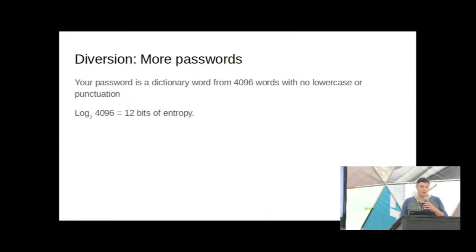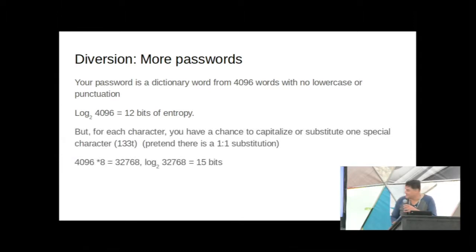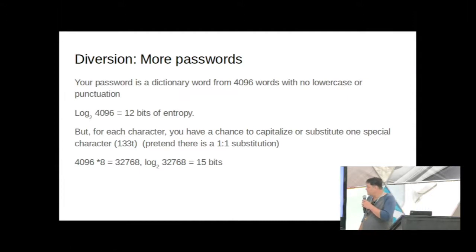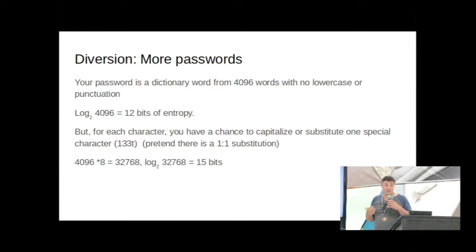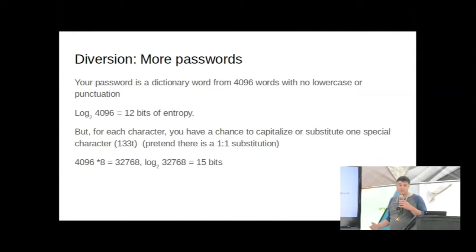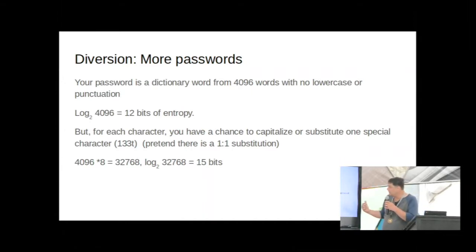If your password is a dictionary word from a 4,096-word list, that gives you 12 bits of entropy. You can see what this is leading to. 12 bits of entropy for a dictionary word is dramatic — you really drop the number of possible passwords compared to 37 or 50. So if I know your password is in the dictionary, I'll run a dictionary cracker against it. The terahash guys would know all about this.